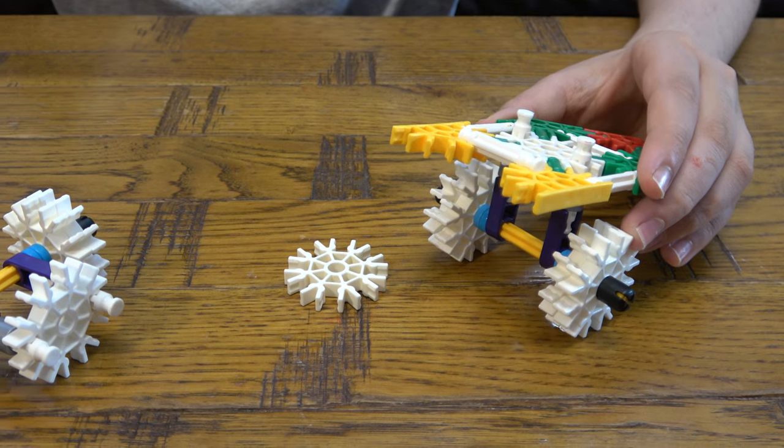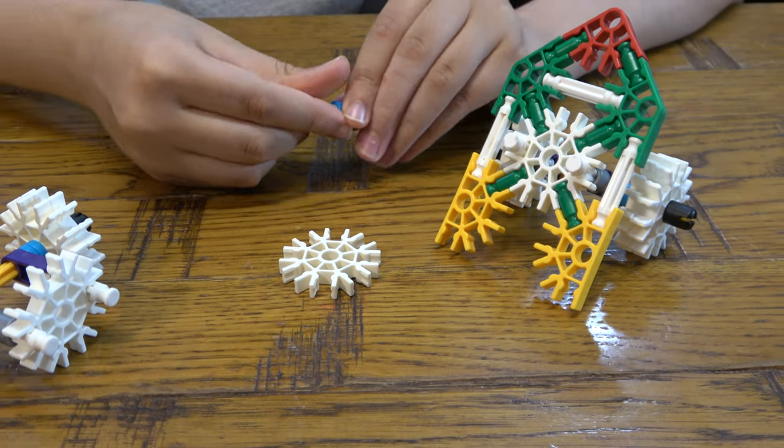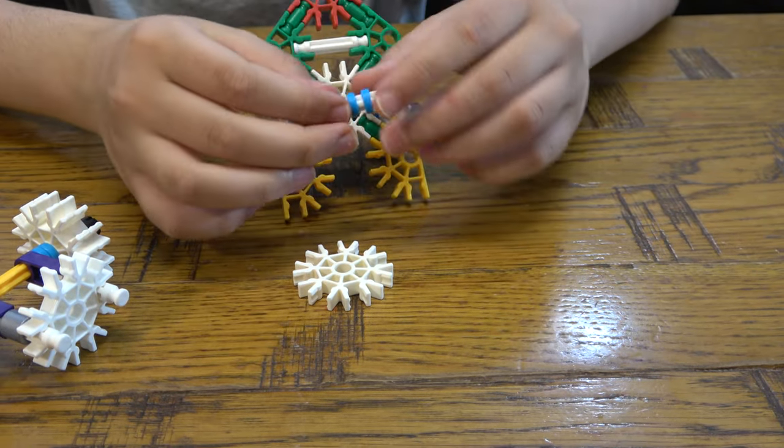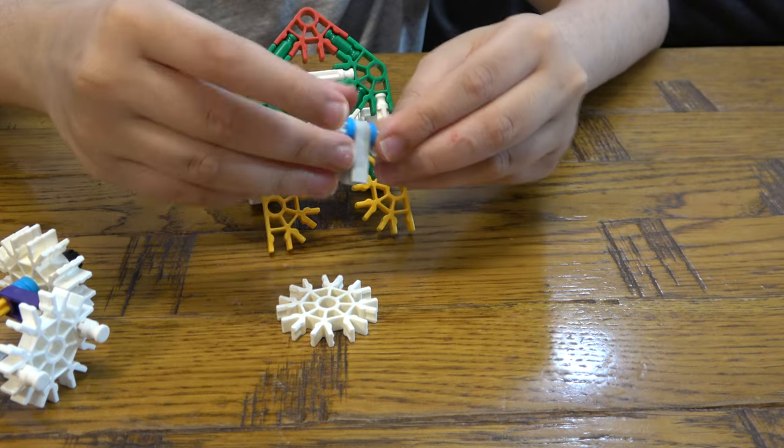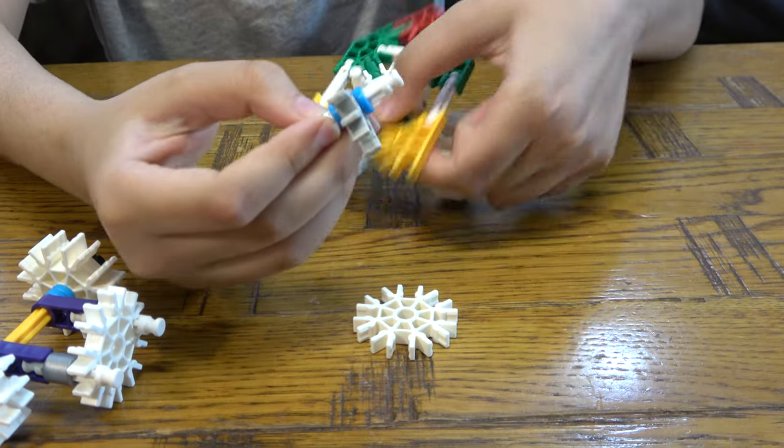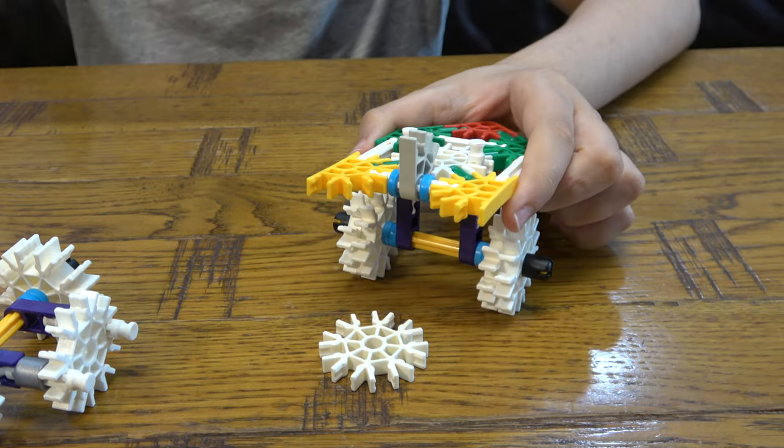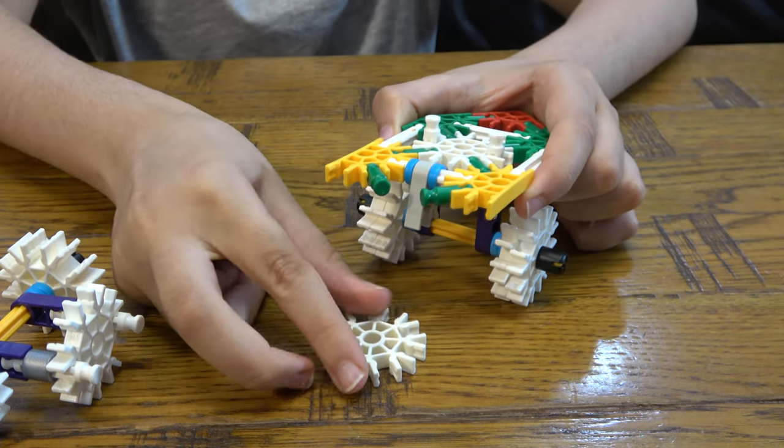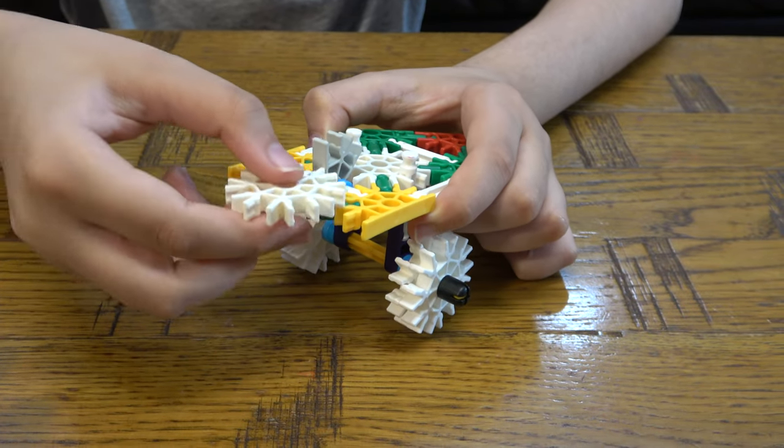And then before we put it on we actually need to get one of these blue pieces like that, and then this grey piece, and then another blue piece. And then next you're going to get two of those.